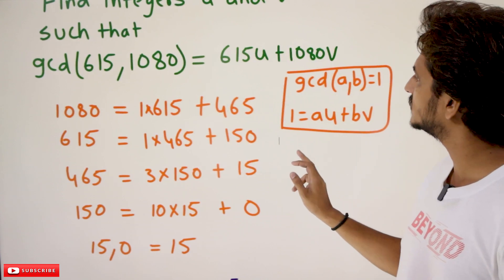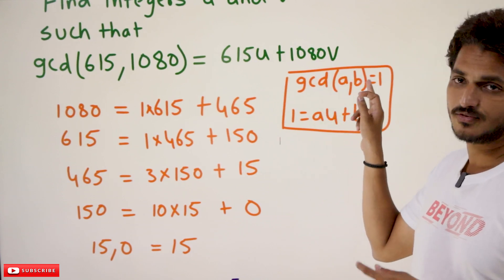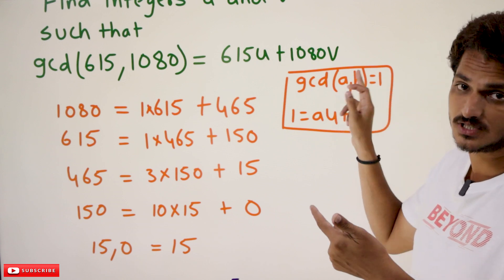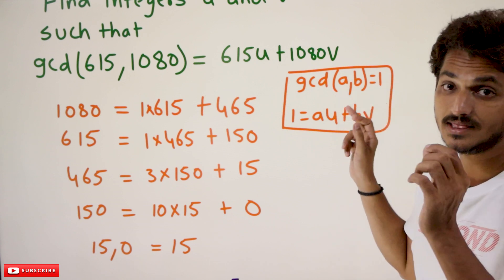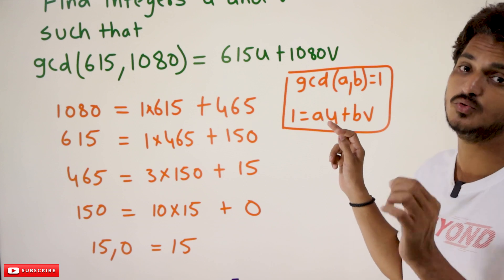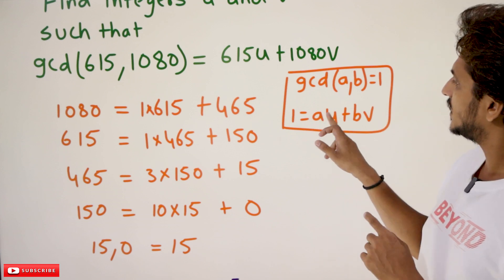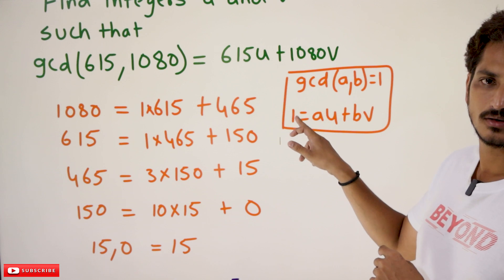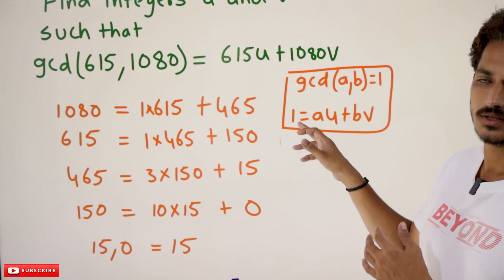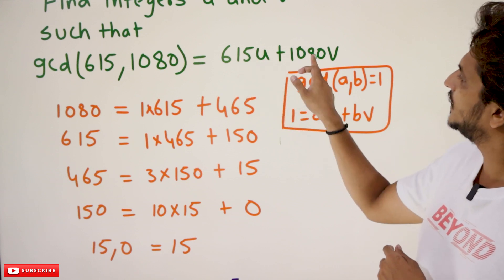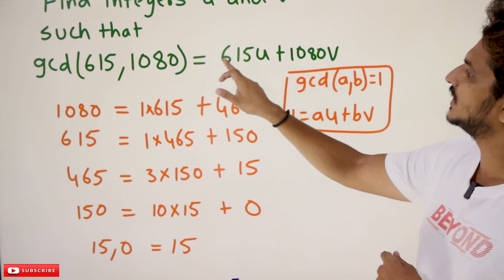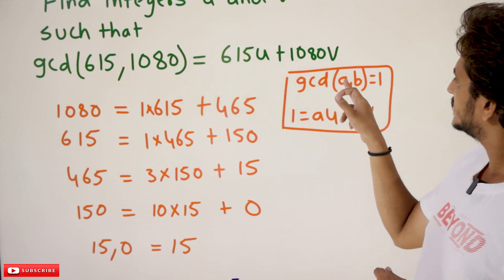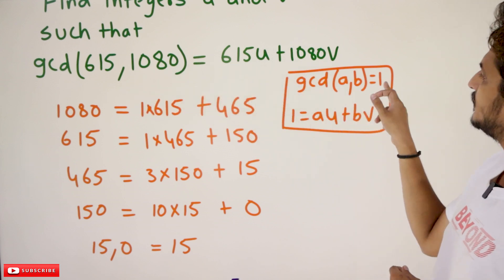A similar property we already discussed in our previous class. The property is: GCD(a, b) = 1, and if this happens then there exist u and v such that au + bv = 1. Similarly, au + bv = GCD(a, b). Here GCD(a, b) is 1.